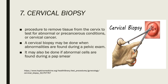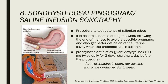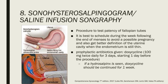Cervical biopsy is used to remove tissue from the cervix to test for abnormal or precancerous conditions or cervical cancer. It may be done when abnormalities are found during a pelvic exam or if abnormal cells are found during a pap smear. Sonohysterosalpingogram or saline infusion sonography is a procedure to test the patency of fallopian tubes. It is best scheduled during the week following the end of menses to avoid possible pregnancy and to get better definition of the uterine cavity when the endometrium is still thin. Prophylactic antibiotics in the form of doxycycline 100 mg twice daily for at least 3 days starting 1 day before the procedure should be given; if a hydrosalpinx is seen, doxycycline should be continued for 1 week.